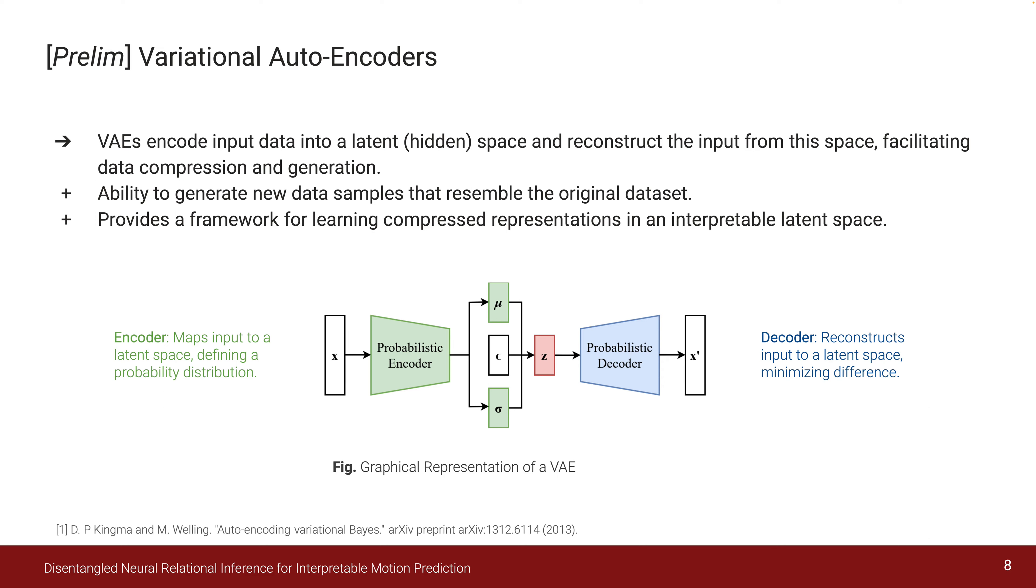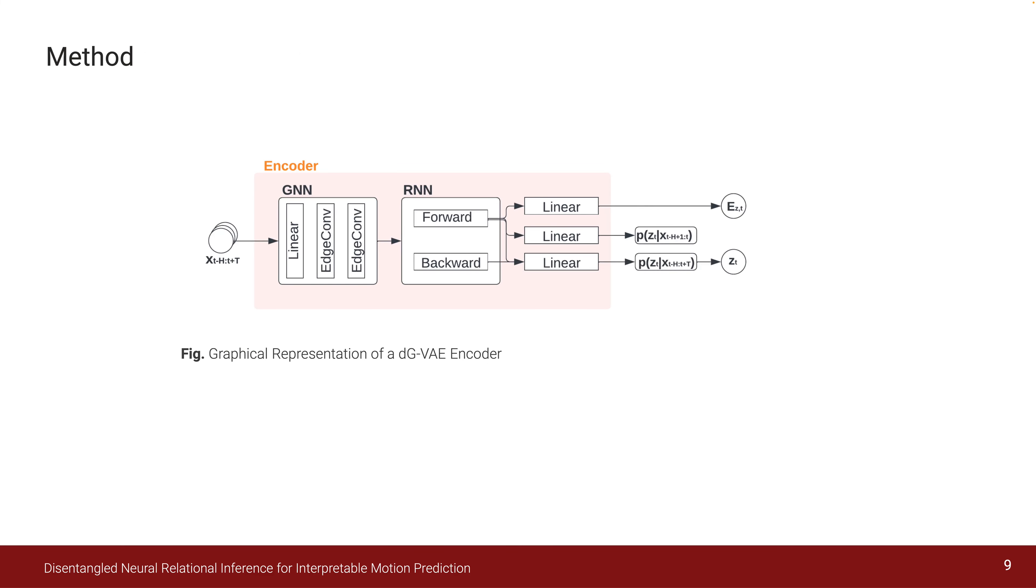This represents our encoder architecture. Our model infers dynamic interaction graphs in a latent space augmented with internal edge features that characterize the interactions.